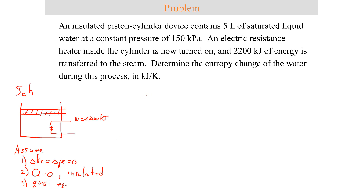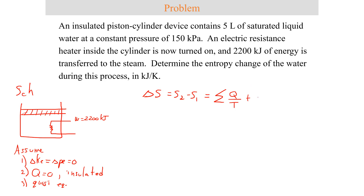This is a closed system. The entropy change of a closed system — entropy at state 2 minus entropy at state 1 — must equal the sum of all entropy transferred to and from the system plus the entropy generated. This is saying that what causes the entropy to change from state 1 to state 2 is equal to the sum of entropy transfer by heat plus the amount generated — that's for a closed system.